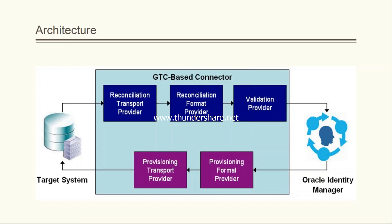In reconciliation, there are three different concepts in GTC. The first is reconciliation transport provider, the second is reconciliation format provider, and the third one is validation provider. The transport provider is used to transfer the records contained in the flat file and helps identify at which location the file is located.